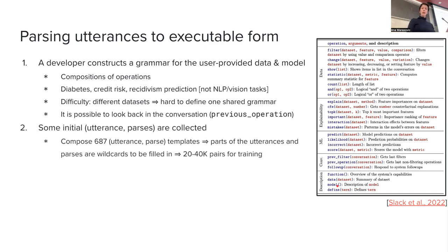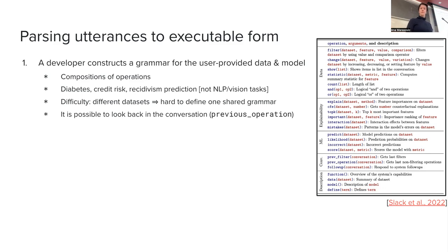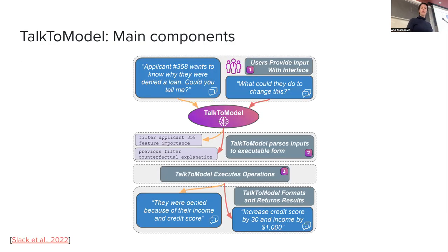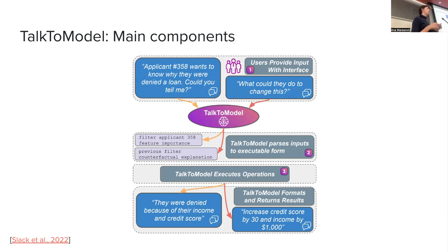So how do we go from an utterance like 'Applicant number something wants to know why they were denied the loan, could you tell me?' — we need to translate this into logical operations. You would first have data filter, filtering the dataset by applicant ID value 358.